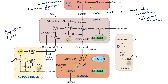Amino acids formed enter the muscle to form protein. The amino acids which enter the liver take part in the urea cycle to form urea, which is excreted in the urine.